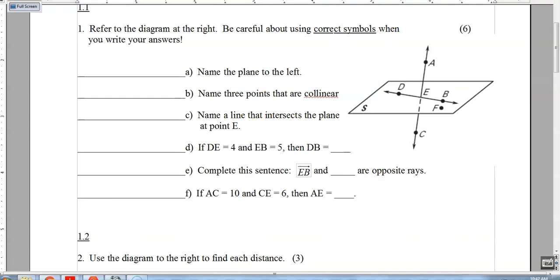Number one, name the plane to the left. So there's two options. The easiest would just call it plane S. Or if you'd like to, you could use any three points on the plane, but they cannot be in a straight line. So you cannot pick D, E, B. You'd have to use F somehow. So an example answer could be plane D, E, F if you want to use three letters.